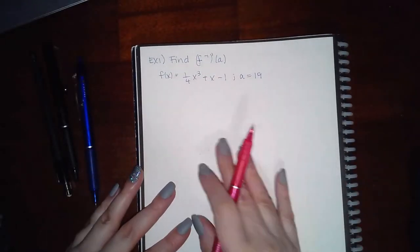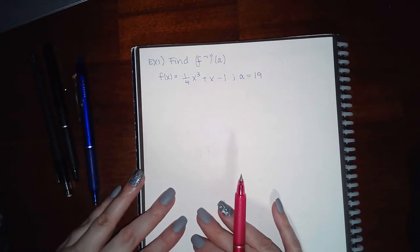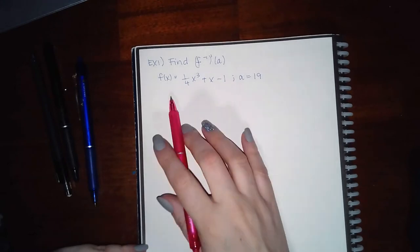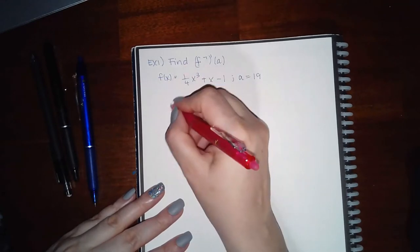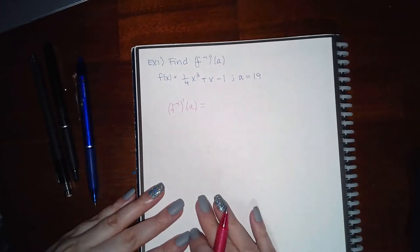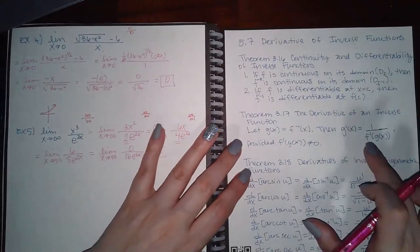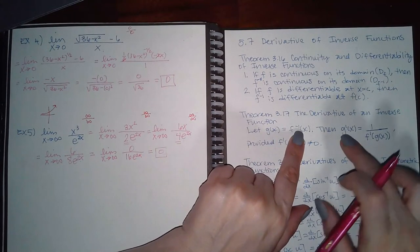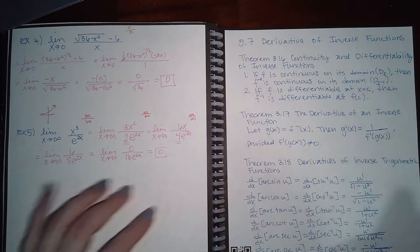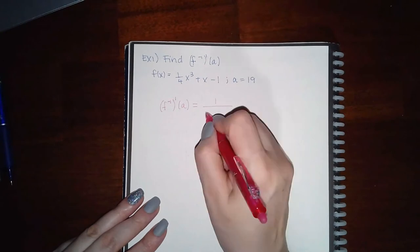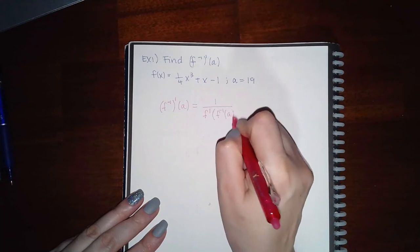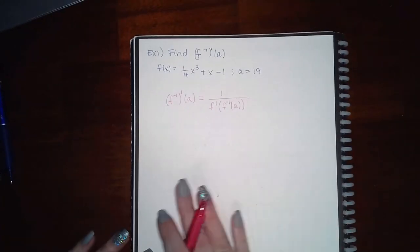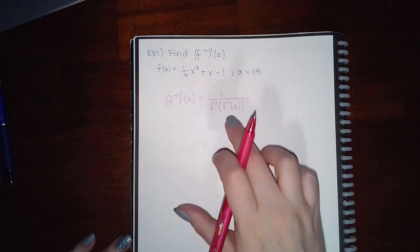For the first problem, it says find f-inverse prime of a, where f(x) is given and a is given. To find f-inverse prime of a, we use Theorem 3.17: since g(x) = f-inverse, f-inverse′ equals 1 over f′ evaluated at f-inverse of a.